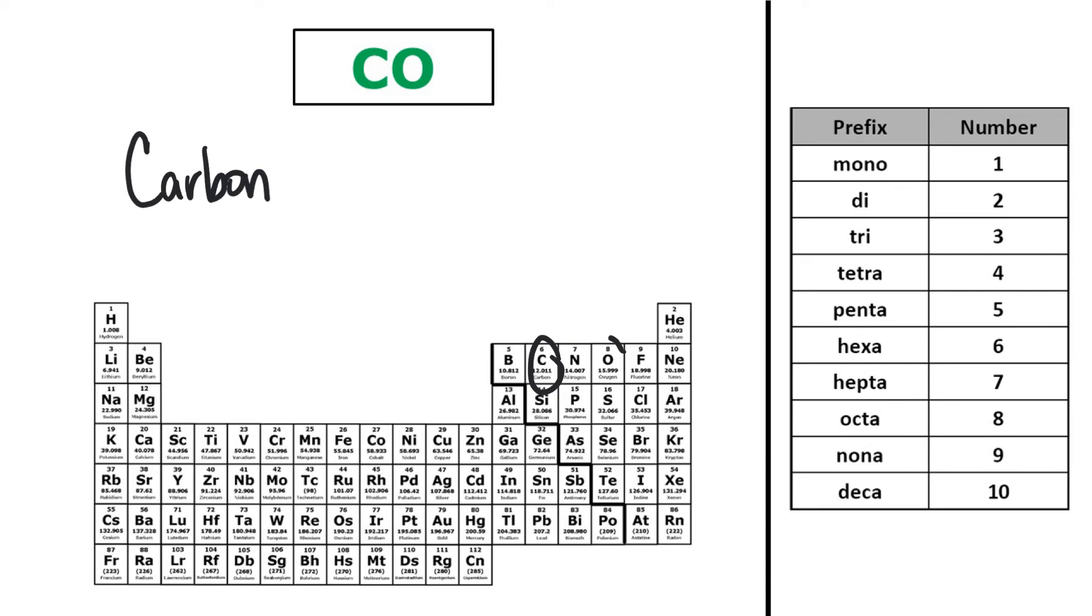And then I have O, which is oxide, and there's only one of them. This is when I use the prefix mono. So it's not that I never use mono, it's just that I don't use it on the first nonmetal. So because I only have one oxygen, I use the prefix mono, and this becomes carbon monoxide. So CO is the formula for carbon monoxide.